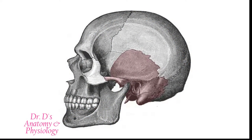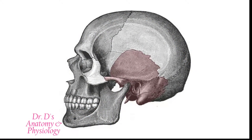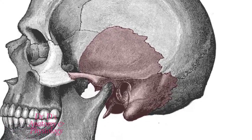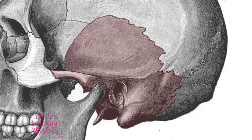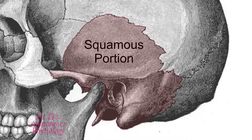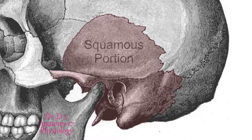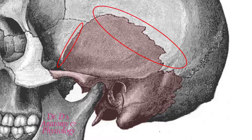This is an irregular bone that you can divide into three major portions. One portion is called the squamous portion. As the name suggests, this portion is flat, like a scale, and it is going to form the lateral wall of the cranium and articulate with the sphenoid, the parietal, and the occipital bones.